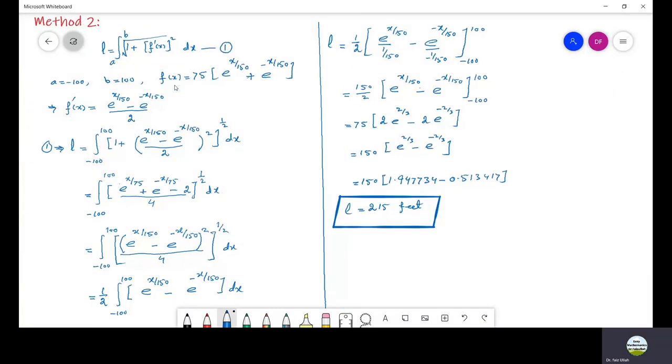In method 2 we use the same procedure but taking f of x equal to 75 times e to the power x/150 plus e to the power minus x/150. From here we get f prime of x and then using the same arc length formula number 1, after simplification we get the same solution. That's all.